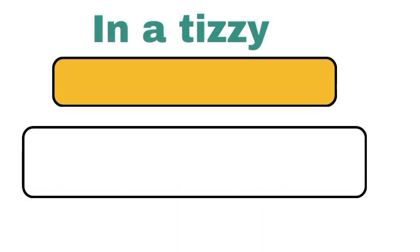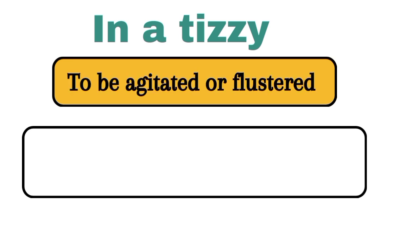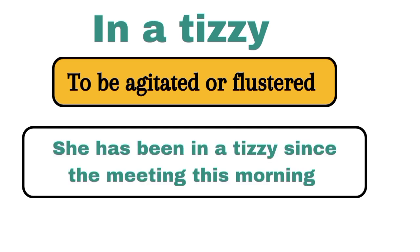In a tizzy. When someone says someone is in a tizzy, it means that they're agitated or flustered. For example, she has been in a tizzy since the meeting this morning.